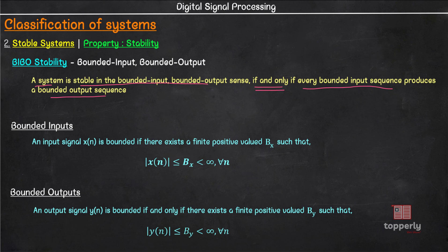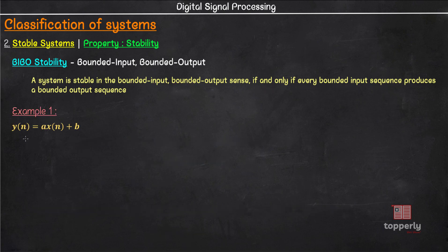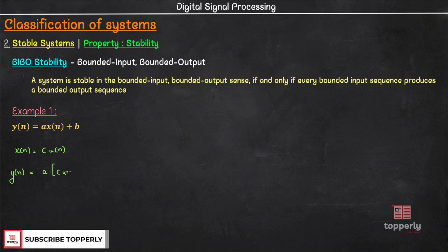Now let us see an example on this topic. Consider a system described by y(n) = a·x(n) + b. We need to check if the system is stable or not. So as an input we select the bounded signal x(n) = c·u(n) where c is a constant. Now let us see the corresponding output y(n) = a·c·u(n) + b which is equal to...